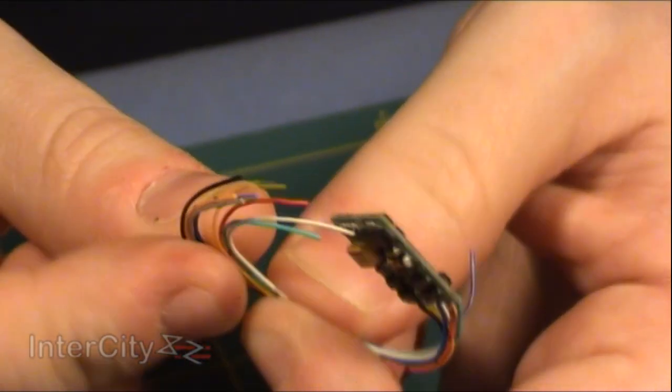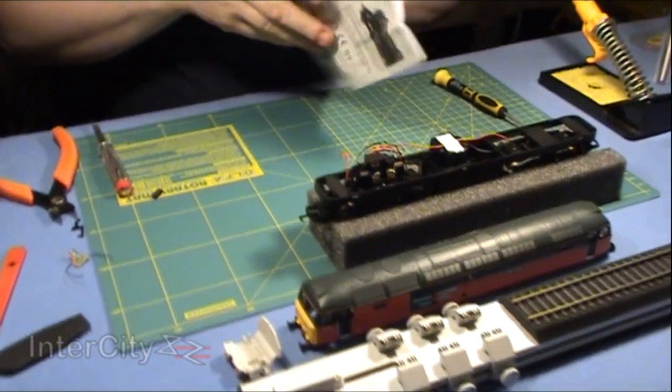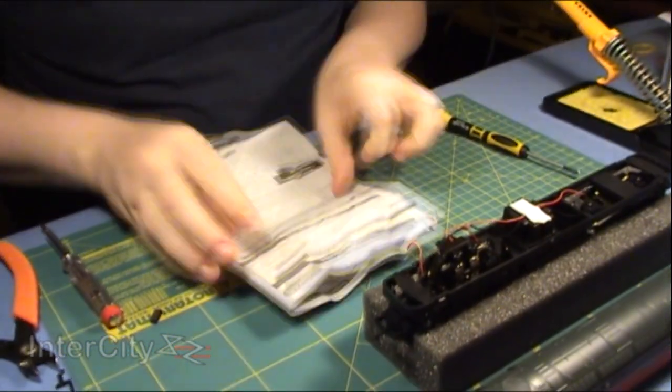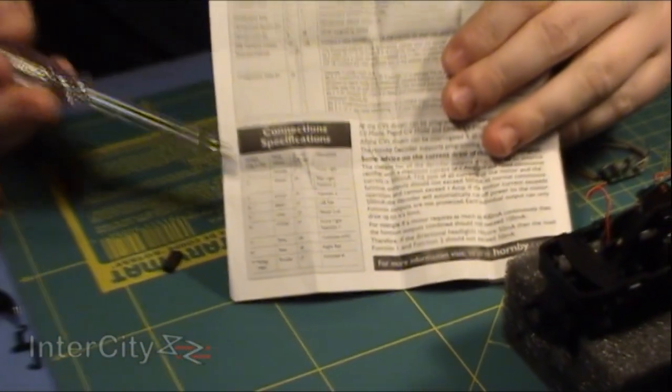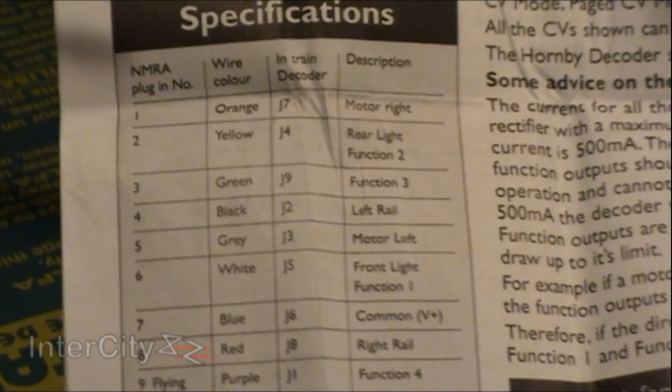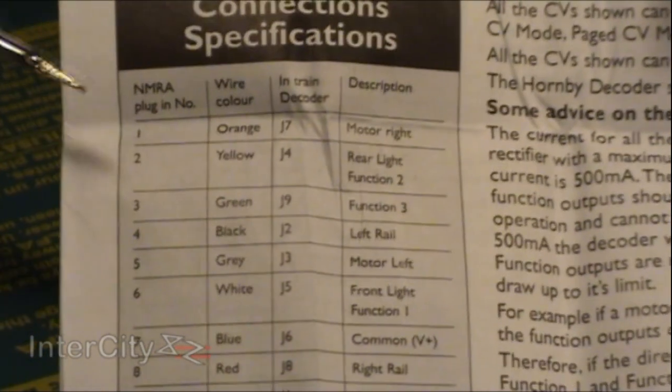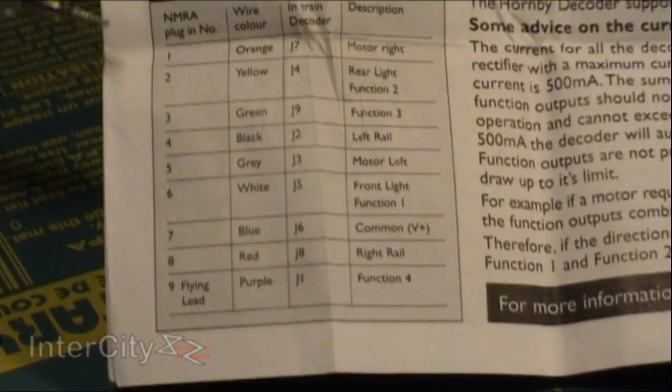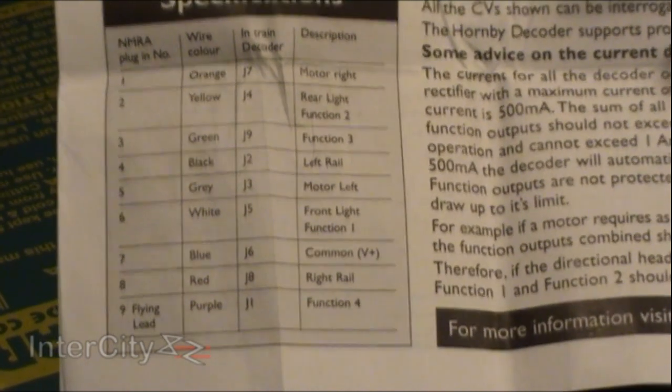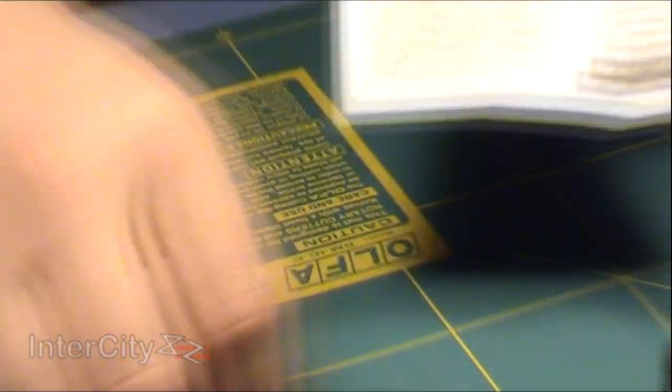Now the most important thing is to know what each of those wires actually does. Let's open up the instructions to the English section. Need to look at this section down here. This is the connection specification. It says the NMRA plug-in number because this is an NMRA-compatible decoder. The entire pin system is standardised so you can put any decoder into any locomotive and it will work. But here it says the wiring colour—you can see orange, yellow, green, black, grey, white, blue, red, and purple. If I bring back the chip, you can see we've got all those colours in those wires.